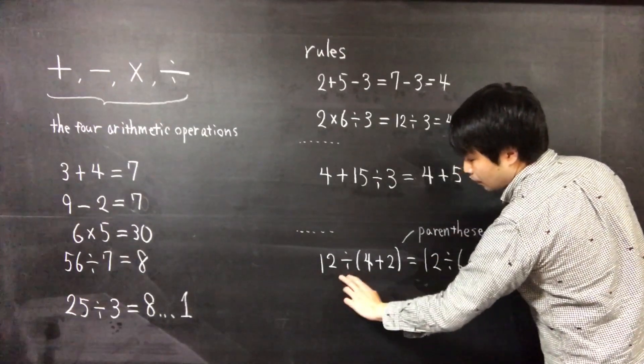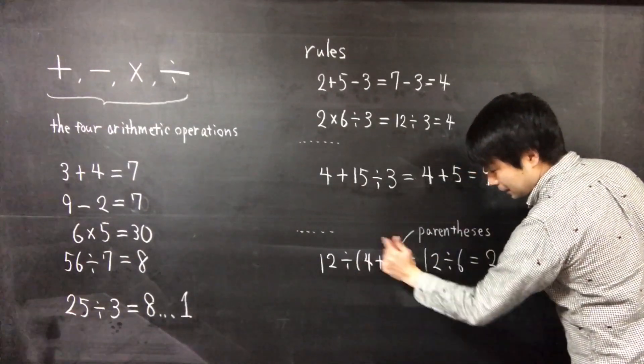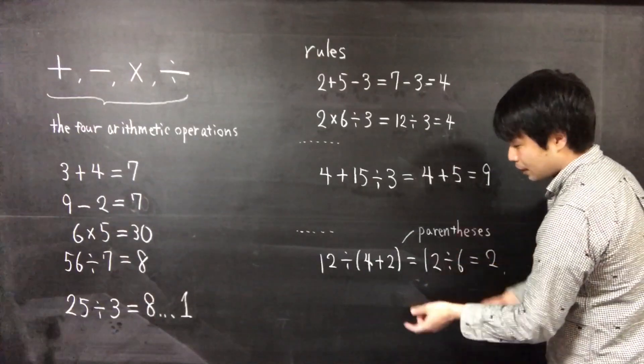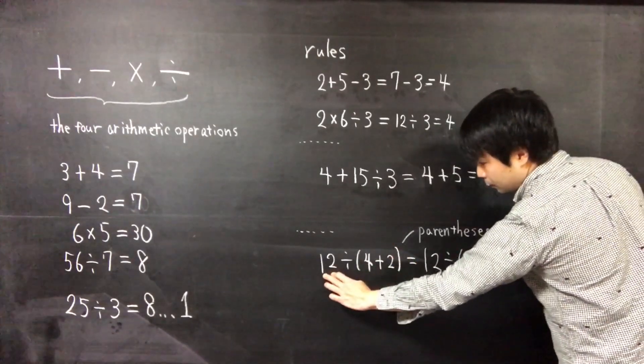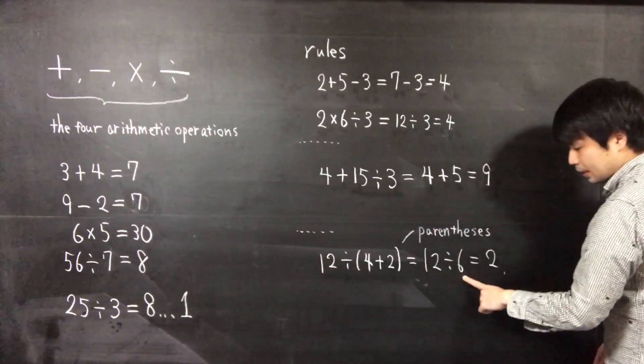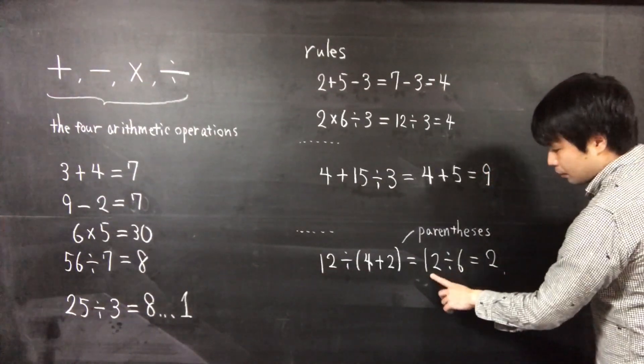The expression has parentheses. We have to calculate within parentheses first. So in this case, 12 divided by this, we have to calculate this part first.